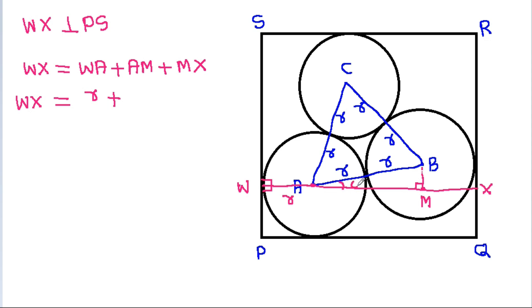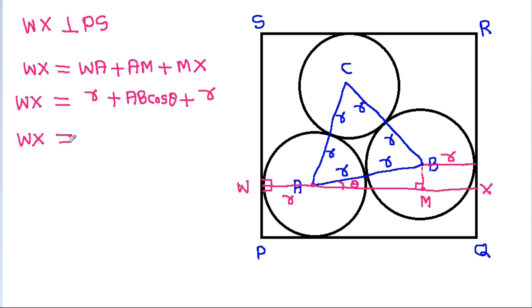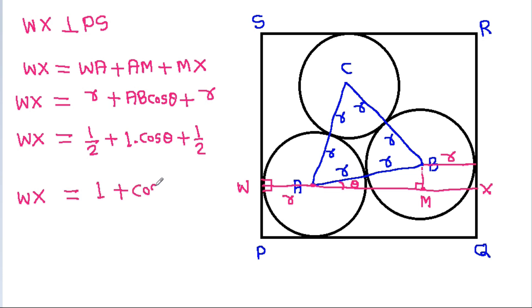If this angle is θ, then AM will be AB·cosθ, and MX will be the radius. So WX = 1/2 + 1·cosθ + 1/2, which gives WX = 1 + cosθ.